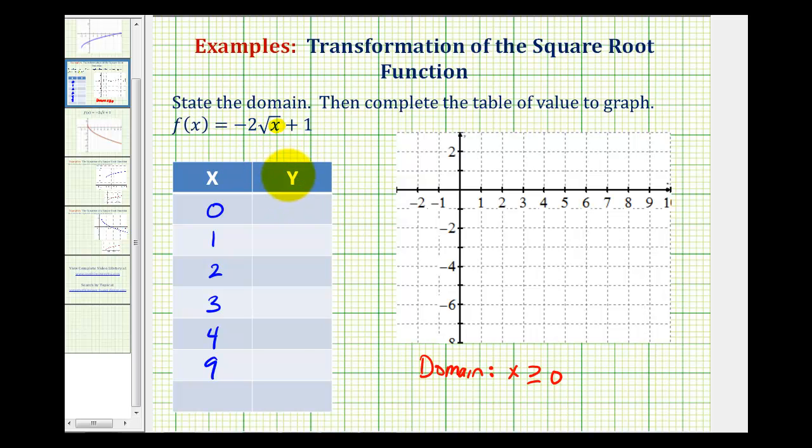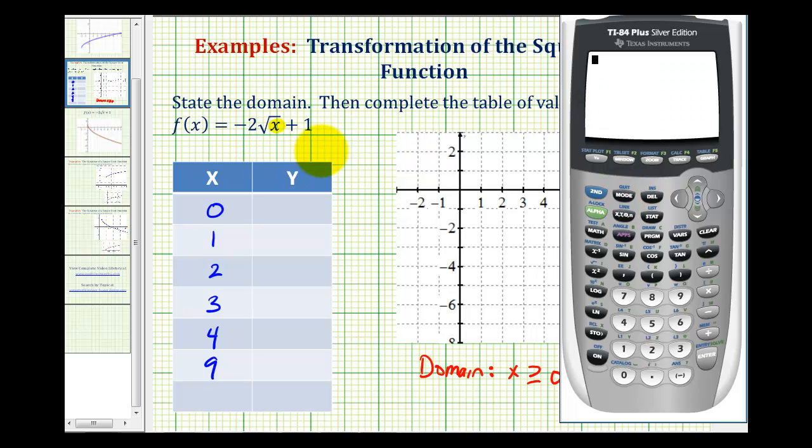For this example, we'll determine the y-coordinates or function values using the graphing calculator. So the first step is to type in our function. We'll press y equals, clear out any old functions, and we're going to press negative two. Then for square root, we're going to press second x squared, x, close parenthesis, and then plus one.